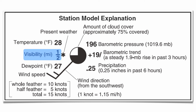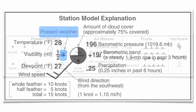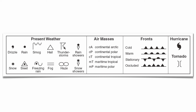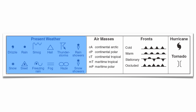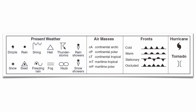Next to that is going to be your present weather. Your present weather is always going to be a symbol. Those symbols can be found at the bottom of page 13. Also in that section are all your different types of air masses: Continental Arctic, Continental Polar, Continental Tropical, Maritime Tropical, and Maritime Polar — all the different air masses that come from different source regions.